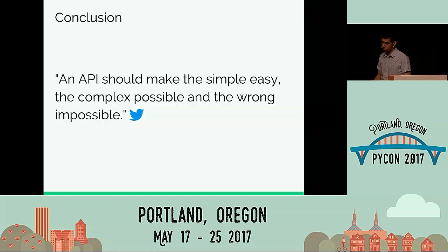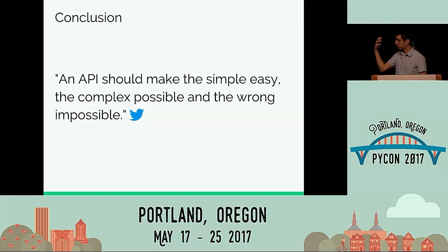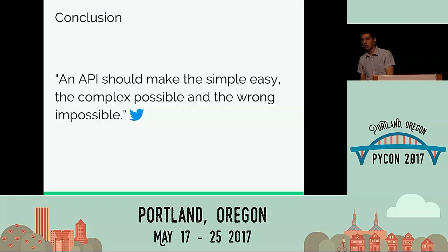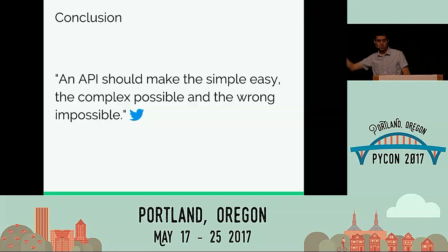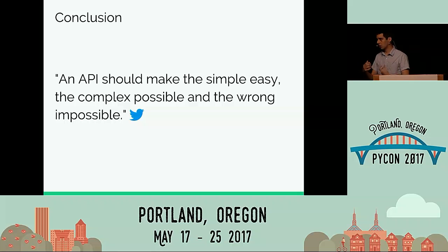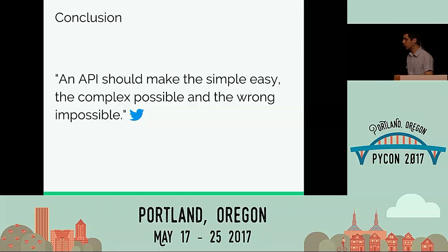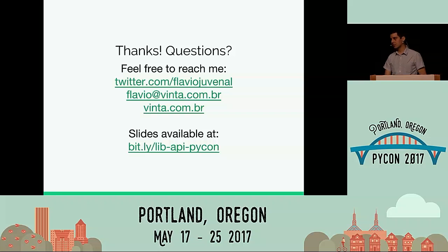To conclude: if you take one thing from this talk, it's that you should make an API that makes the simple easy, the complex possible, and the wrong impossible. Simplicity is 'the simple easy,' flexibility is 'the complex possible,' and consistency and safety — which I didn't cover today — is 'the wrong impossible.' That's what we need to have in mind when building our APIs. Thank you very much — feel free to reach me.